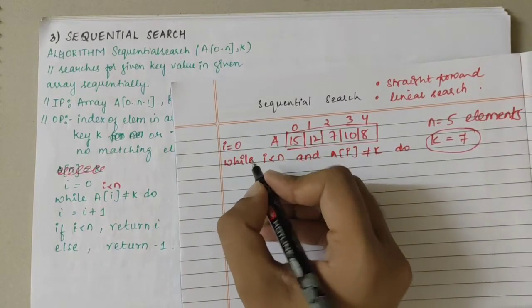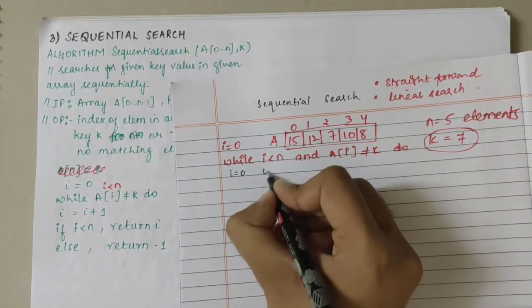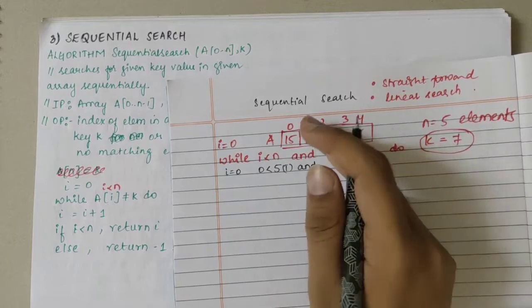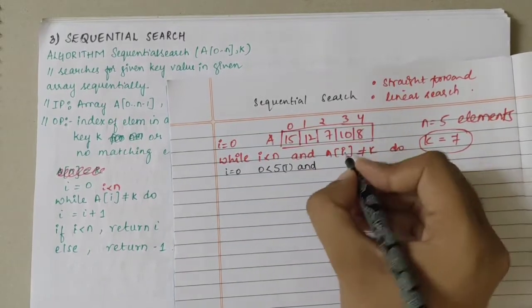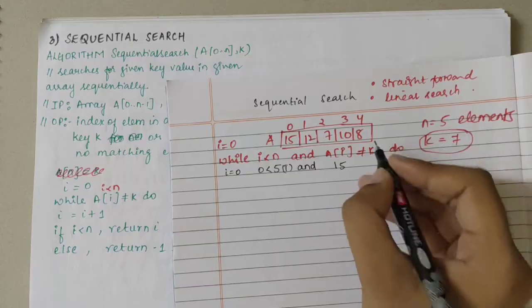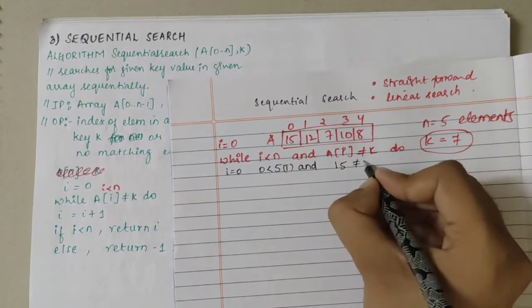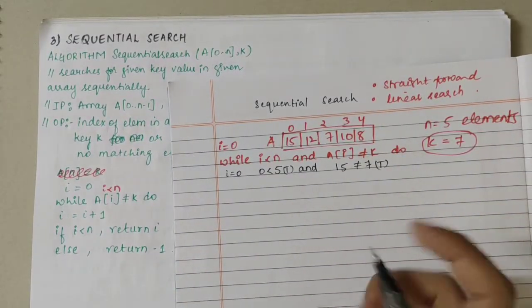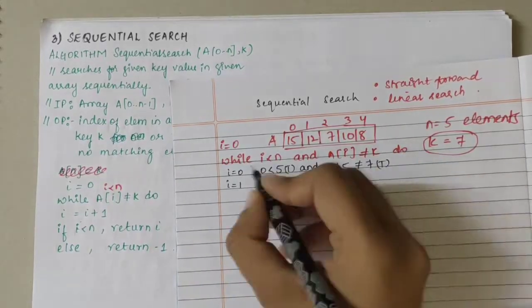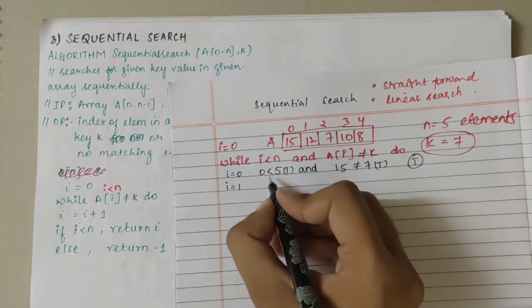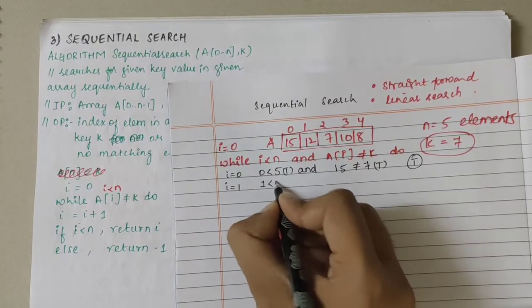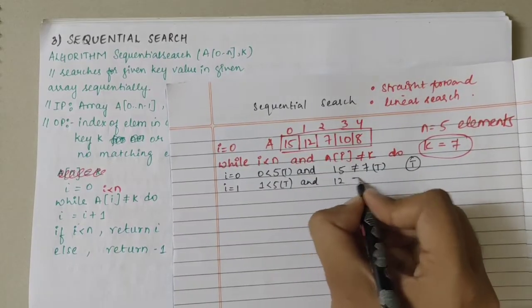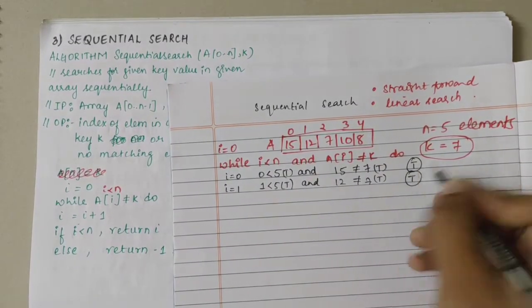Let me start from i equal to 0. Initially i is 0; 0 is less than n which is 5 — true. And A[i] is A[0], which is 15. 15 is not equal to k, which is 7 — also true. If both are true, then I jump into the next part and increment i to i plus 1. Now i is 1; 1 is less than 5 — true. And A[1] is 12, which is not equal to 7 — again true.